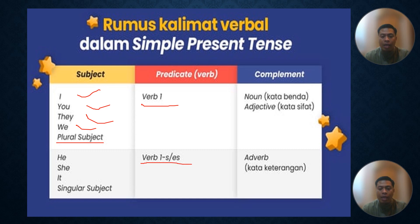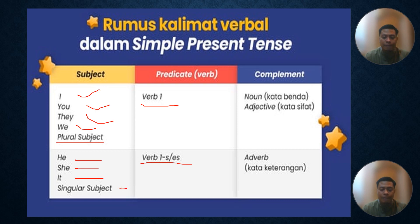Kalau subjeknya He, kata kerja bentuk pertamanya ditambahkan S. Kemudian kalau subjeknya She, itu juga ditambahkan S, sama dengan singular subject. Ini hanya khusus untuk simple present tense ya.